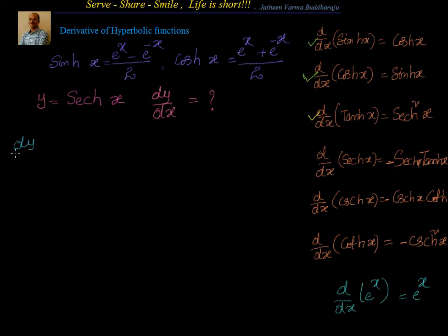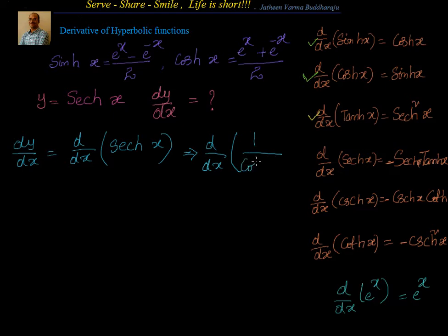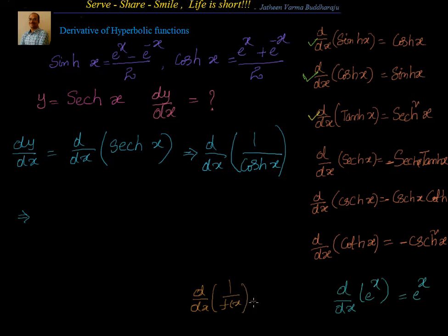Now let's find the derivative of sech(x). We write it as d/dx[1/cosh(x)]. We use the reciprocal formula: d/dx[1/f(x)] = -f'(x)/f(x)². So d/dx[1/cosh(x)] equals -1/cosh²(x) multiplied by the derivative of cosh(x).